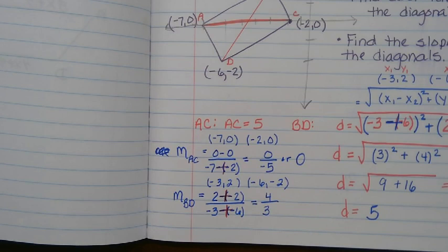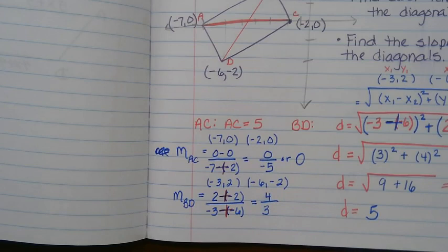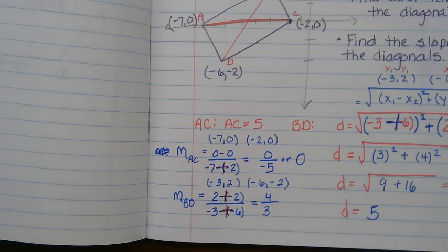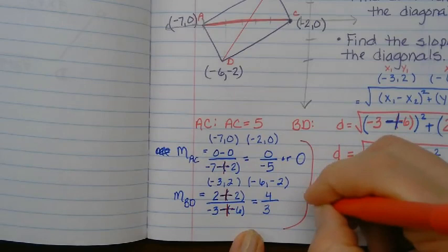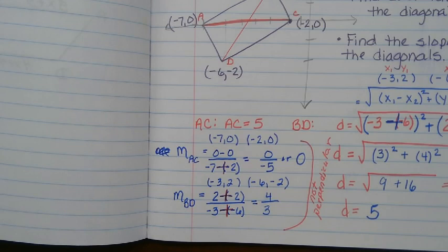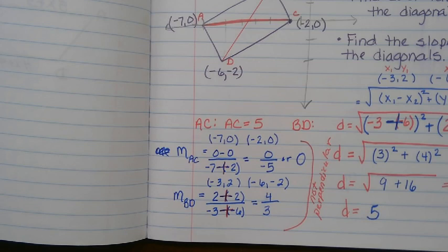No, because the opposite reciprocal of 4 thirds would be negative 3 over 4. The opposite reciprocal of this one, we would have come up with something like positive 5 over 0 at this point. So these are not opposite reciprocals of each other, meaning that these two segments, these two diagonals, are not perpendicular. Or you can say they're not right angles, they don't form right angles.